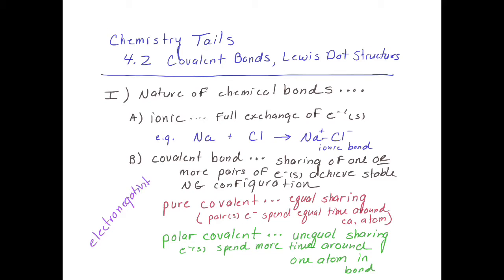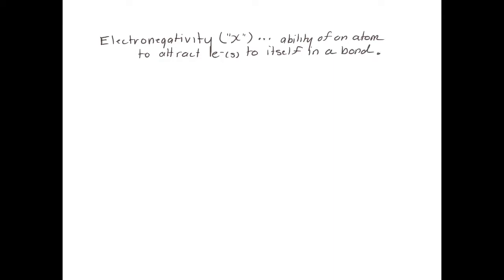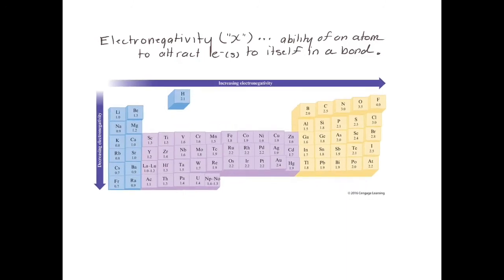Electronegativity is a little bit different than electron affinity, but somewhat similar. This is electronegativity — it was discovered by Linus Pauling, a very famous scientist. We represent this property by Greek letter chi, which looks like an X. It is the ability of an atom to attract electrons to itself in a bond. This is the property that measures how well an element attracts electrons to itself.